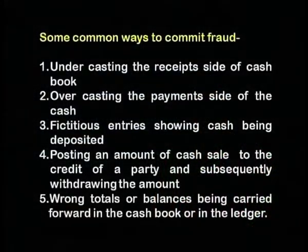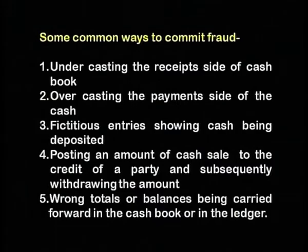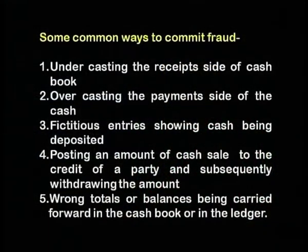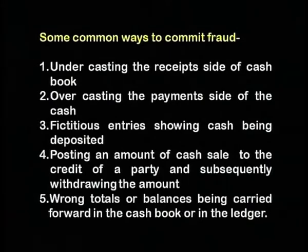Number one is undercasting the receipts side of the cash book — the cash will become less. Overcasting of the payment side of the cash — a greater cash outgo will be shown, hence lesser cash. The third one is fictitious entries showing cash being deposited, posting an amount of cash sale to the credit of a party and subsequently withdrawing the amount.